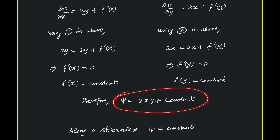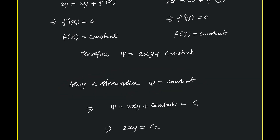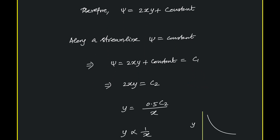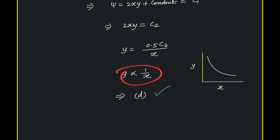This is the equation of the streamline, or what is called the stream function. Along a streamline, psi is a constant. So with ψ = 2xy + constant equal to c1, we write 2xy = c2, a single constant. Solving for y, we get y = c2 / (2x), meaning y is inversely proportional to x, which produces a hyperbolic curve.